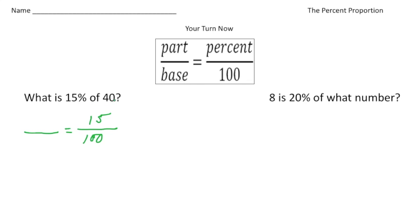So 40 is the entire thing, or the base, so the 40 goes down here. And then the unknown is going to be the part. So now we can cross multiply and divide. So 100 times n is 100n.